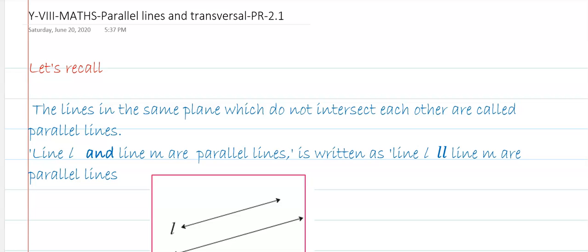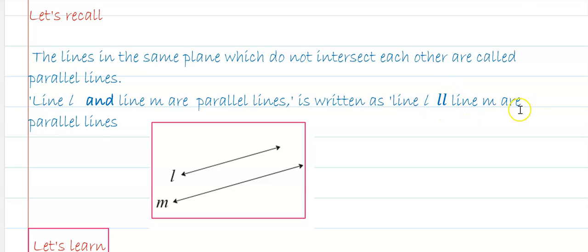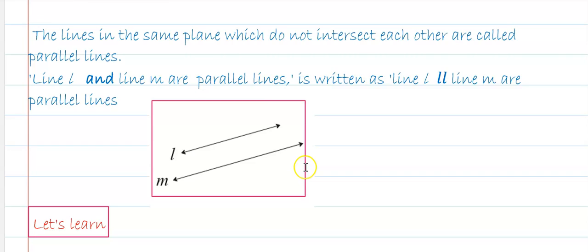Hello friends, now we will start the new chapter: parallel lines and transversal. Let's recall that lines in the same plane which do not intersect each other are called parallel lines. In this figure, line L and line N are parallel lines, written as line L parallel to line N, where the two vertical lines is the sign for parallel lines.